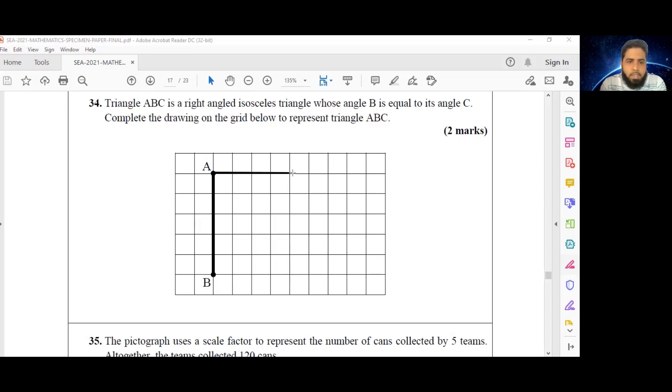So the AB side is one, two, three, four, five squares long, so I'm going to draw one here from A to C that is also one, two, three, four, five squares long. And then I can connect that side B to C. And what I have here now is a right angled isosceles triangle.